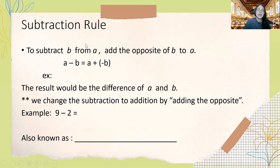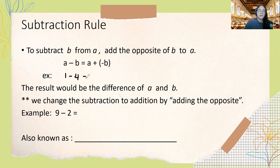Our subtraction rule is that when we subtract B from A, we add the opposite of B to A. So A minus B becomes A plus negative B. For example, 1 minus 4 becomes 1 plus negative 4. We change the subtraction to addition by adding the opposite, and the result is the difference of A and B.